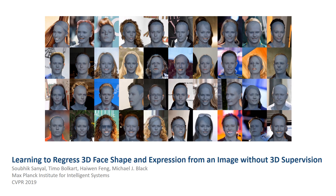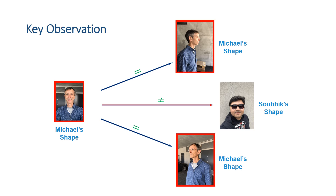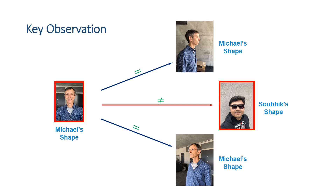Learning to request 3D face shape and expression from an image without 3D supervision. Our key observation is that an individual's 3D face shape is consistent across images, regardless of expression, pose, lighting, etc., but that 3D face shape differs between people.